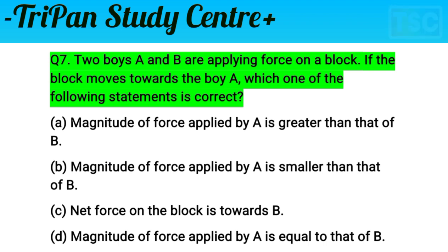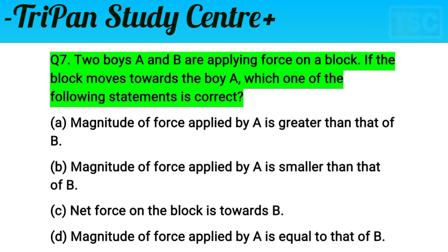Next question: two boys A and B are applying force on a block. If the block moves toward boy A, which of the following statements is correct? A) magnitude of force applied by B is greater than that of A, B) magnitude of force applied by A is smaller than that of B, C) net force on the block is toward B, D) magnitude of force applied by A is equal to that of B.